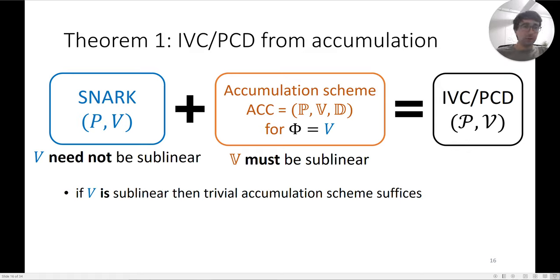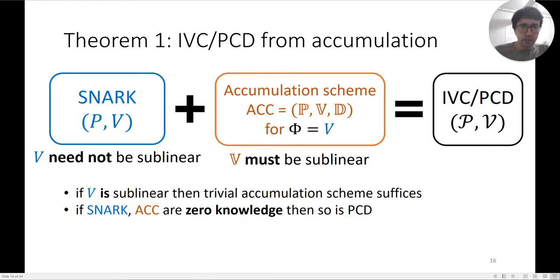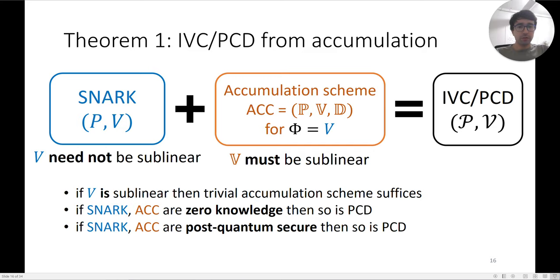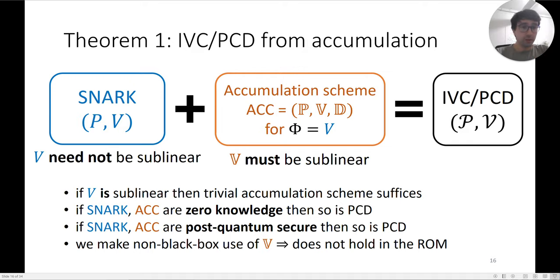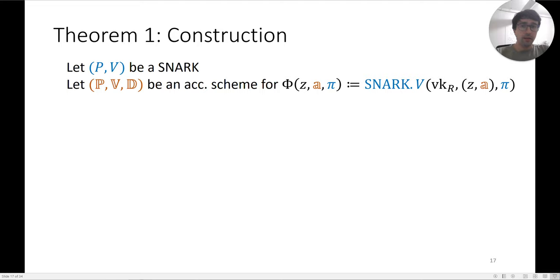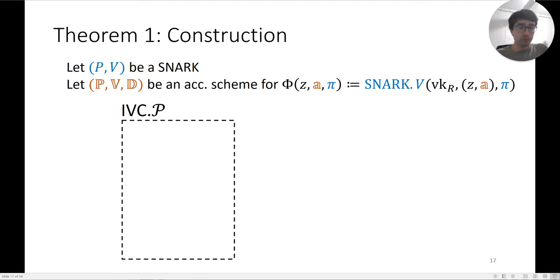Note that if the SNARK verifier is in fact sublinear, you can trivially achieve this by setting the accumulation verifier equal to the SNARK verifier, with the decider doing nothing. But there are more interesting constructions. Moreover, this construction preserves both zero-knowledge and post-quantum security.